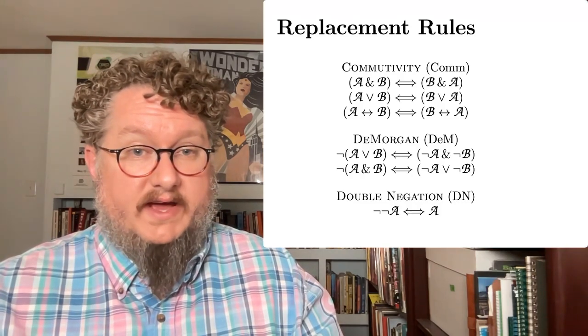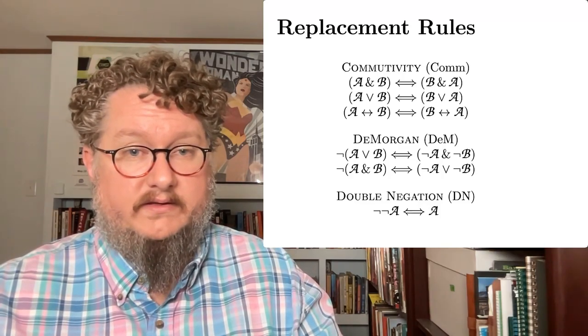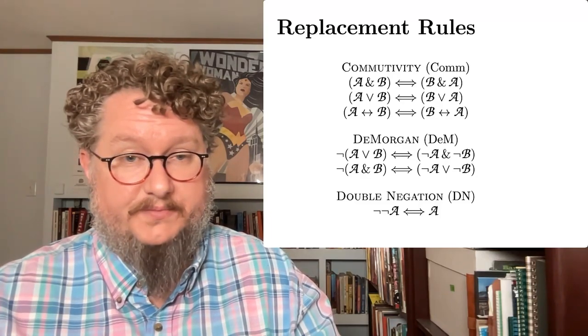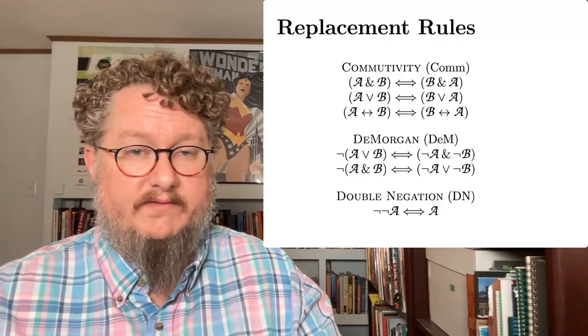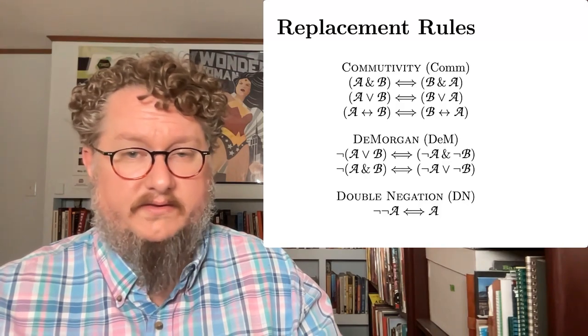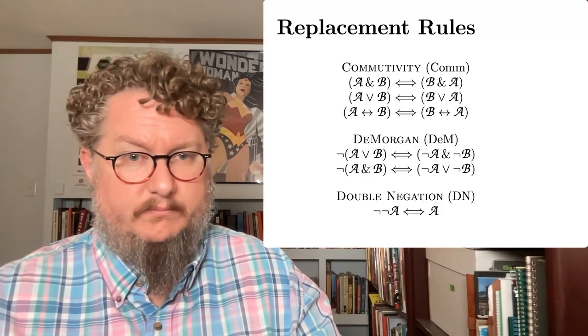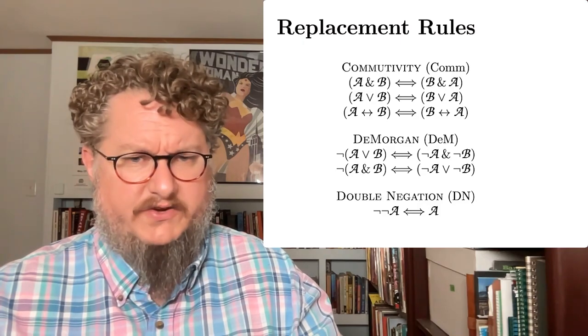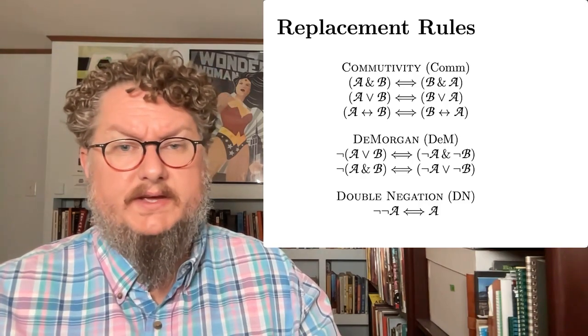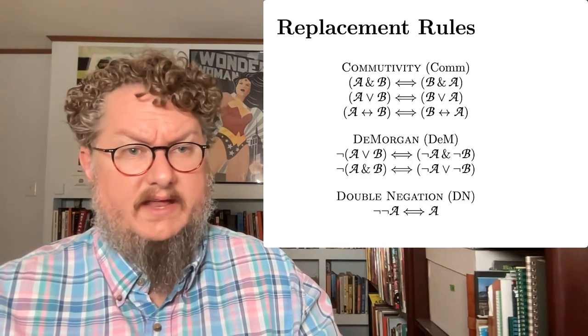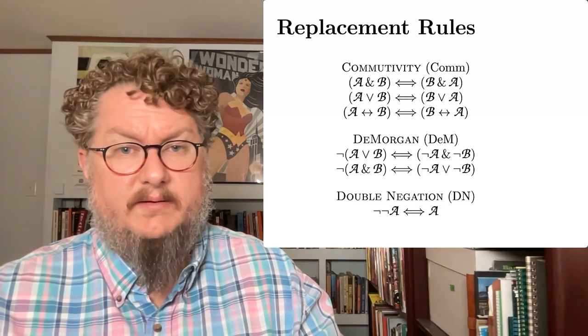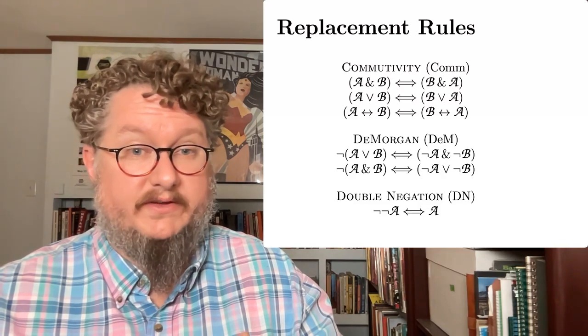DeMorgan's laws are another kind of replacement rule having to do with the interaction between negation, disjunction, and conjunction. So if we have the negation of A or B, that's the same as not A and not B. If we have the negation of the conjunction of A and B, that's the same as not A or not B. We've seen that previously. We can show that with truth tables. The examples of that are the case. And here, the rule allows us to make that substitution.